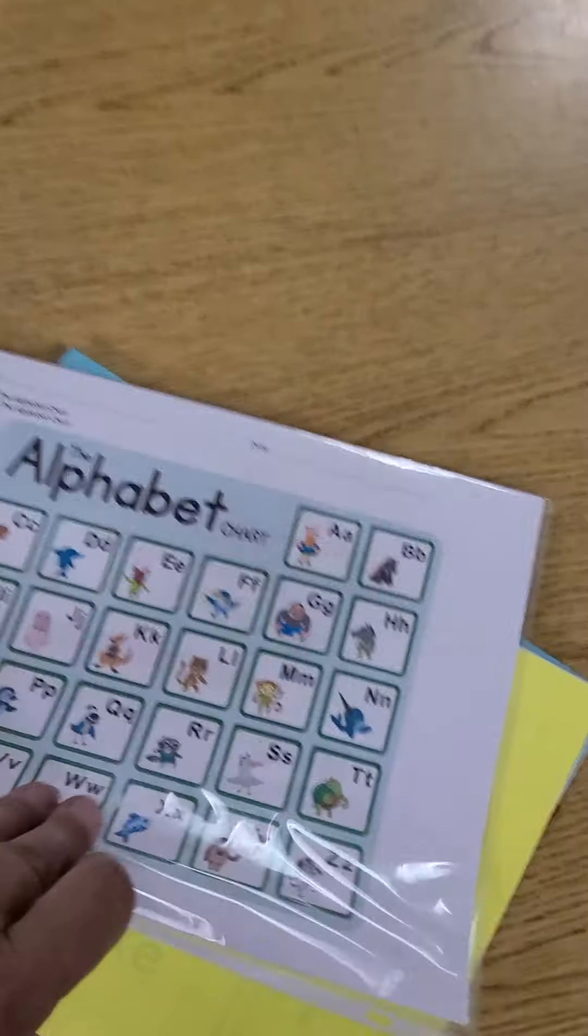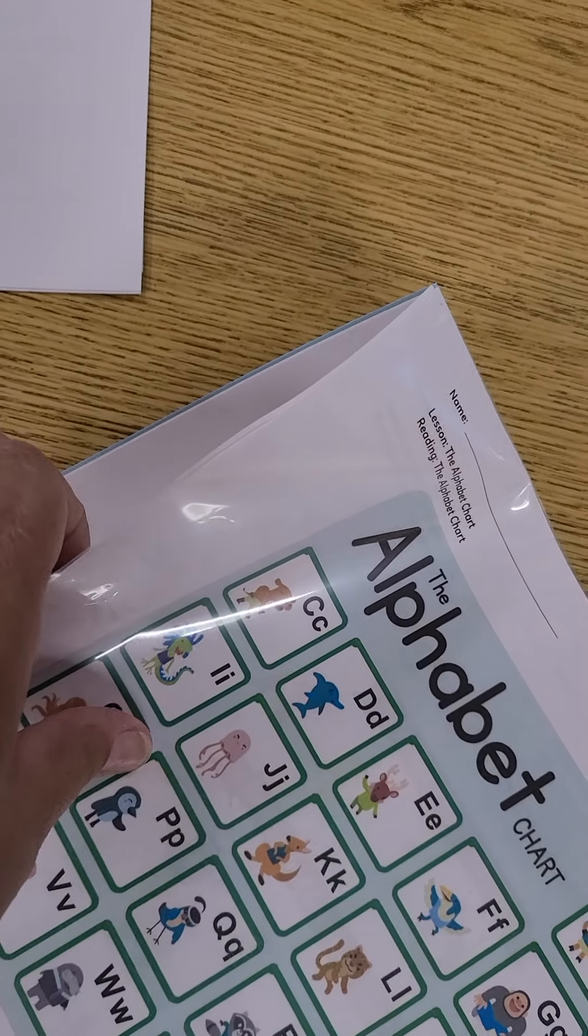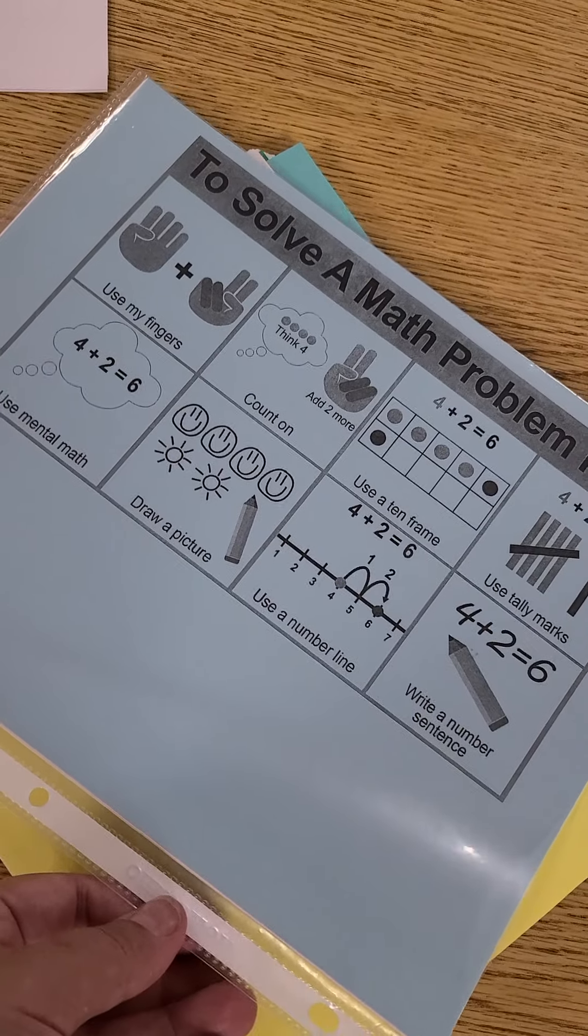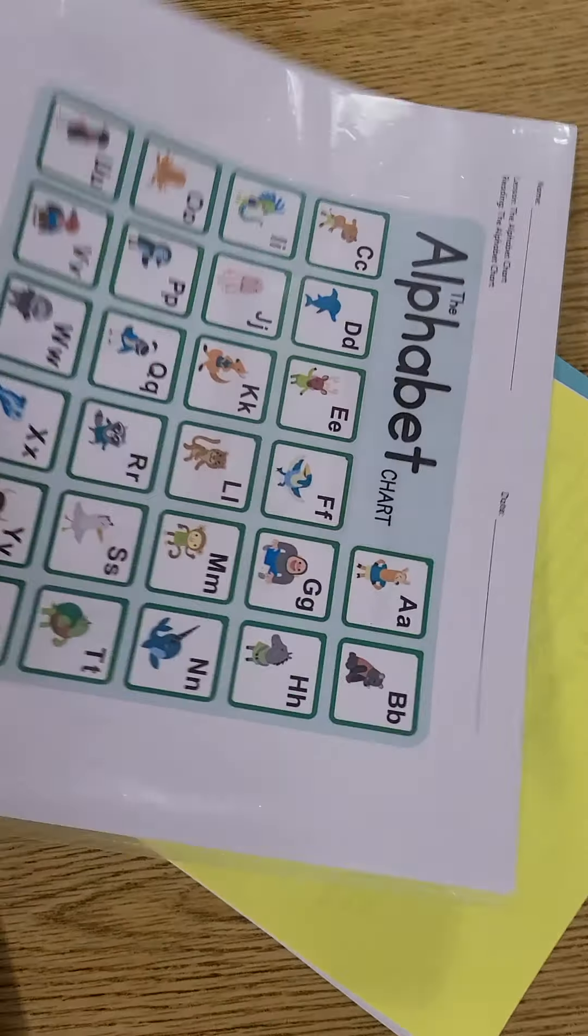The next item are anchor charts. These are inside a sleeve so you have your alphabet and there's probably five or six different anchor charts for ELA and on the back side there is an anchor chart for math. You can put this in your purple folder and keep those anchor charts handy.